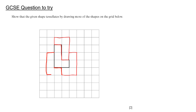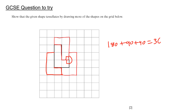And if we look at a point where three of them intersect, for example here, we should notice that the interior angles are 90, there's another 90 there, and here we can see that's 180. Now 180 plus 90 plus 90 is going to be 360, which shows us that the shape tessellates.